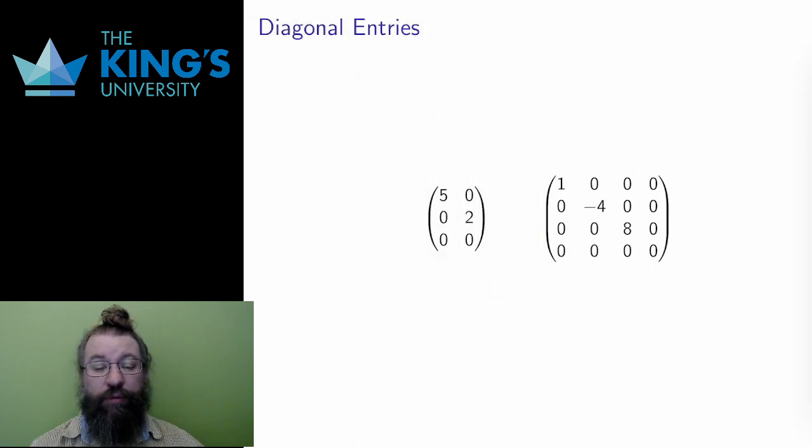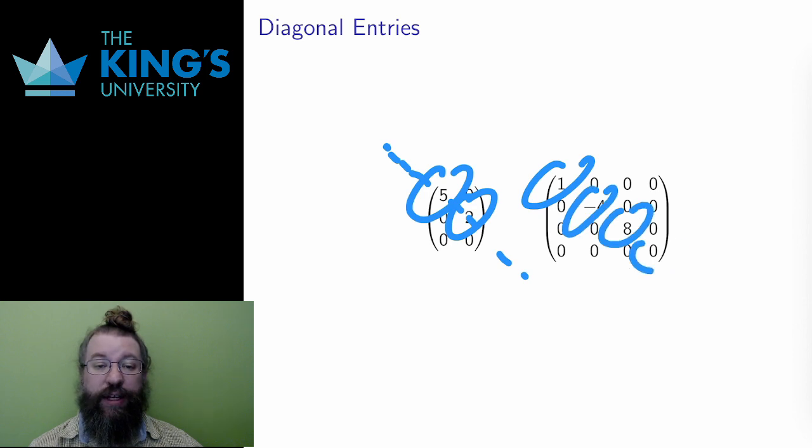If I draw a line from the top left of a matrix to the bottom right, this line is called the diagonal of the matrix. Entries that are on the diagonal are called diagonal entries. In the first matrix here, 5 and 2 are the diagonal entries. In the second, 1, negative 4, 8, and 0 are the diagonal entries.